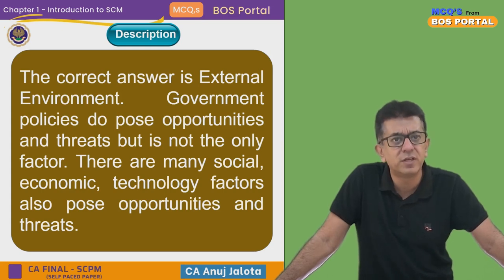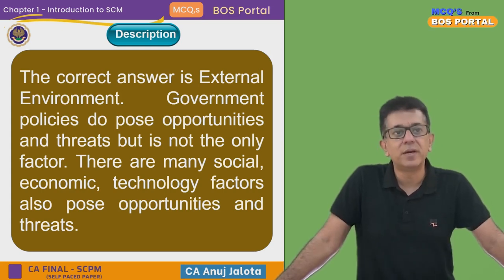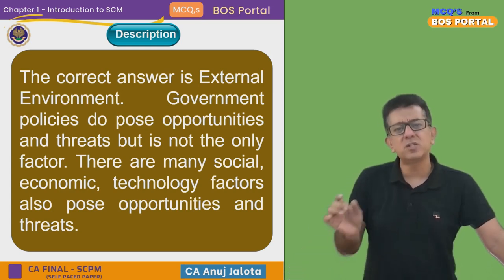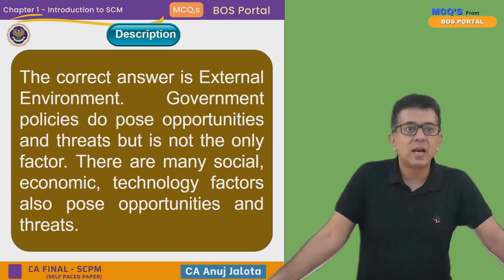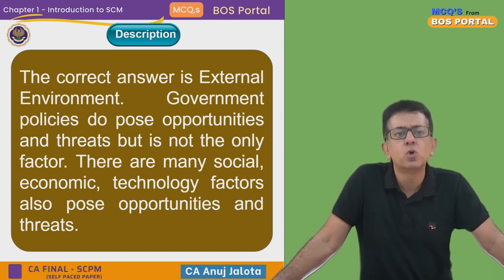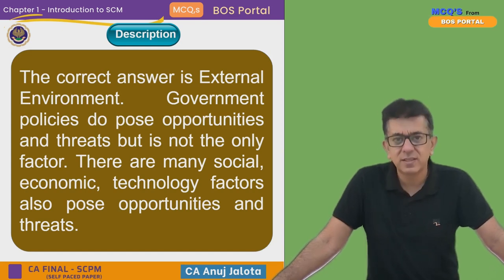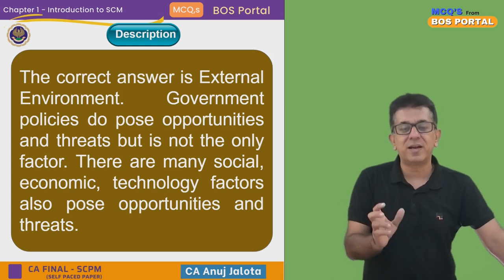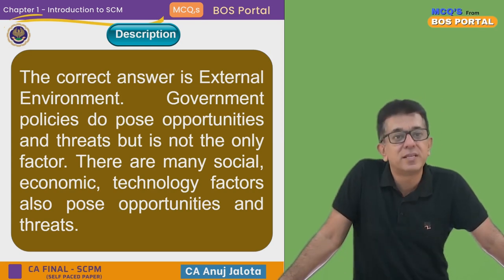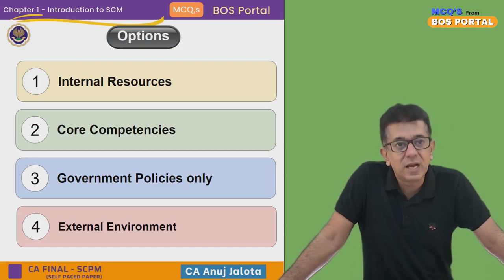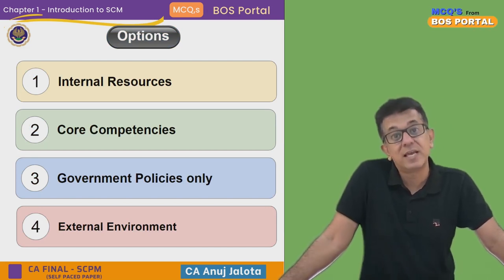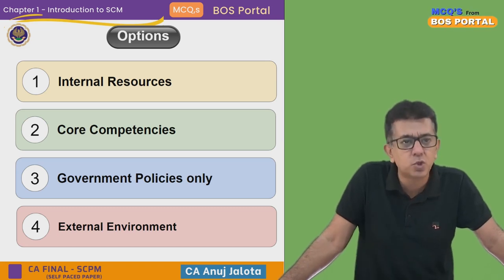Out of the four options, the answer should be external environment. Let's check the institute's description — the correct answer is external environment. Government policies do pose opportunities and threats, but they are only one factor. There are also social, economic, and technical factors. But based on the question, the answer is external environment — it gives us opportunities and poses threats to us. So the answer is option four.